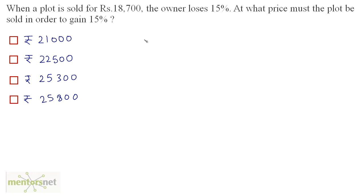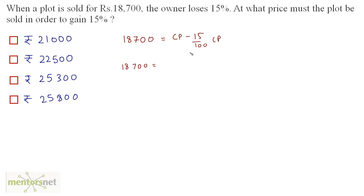When a plot is sold for 18,700 rupees, the owner loses 15%. At what price must the plot be sold in order to gain 15%? The selling price of this plot is 18,700, so 18,700 equals the cost price minus 15% of the cost price, which gives 85/100 of the cost price.